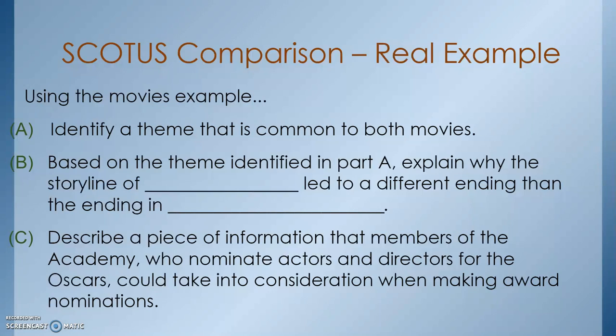Explain how the storyline of movie one led to a different ending than movie two. For Part C, describe a piece of information that members of the Academy — the ones who nominate for the Oscars — could take into consideration when they make award nominations. That is your homework assignment, and that is what will be due.